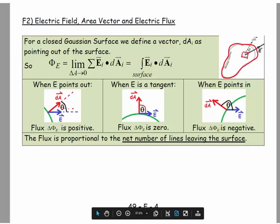So positive flux if the electric field is coming out of the Gaussian surface, negative flux if the electric field is going into the Gaussian surface. And we say that the total flux is proportional to the number of field lines entering and leaving the surface.